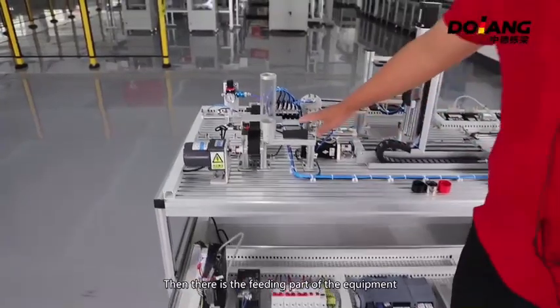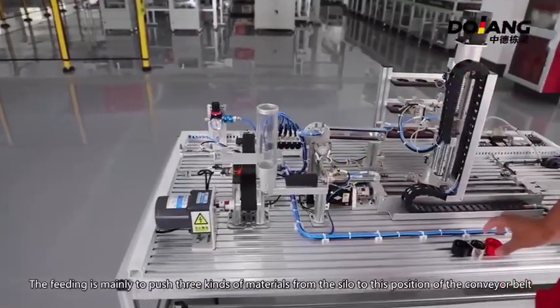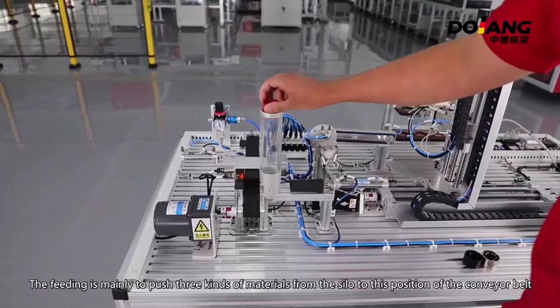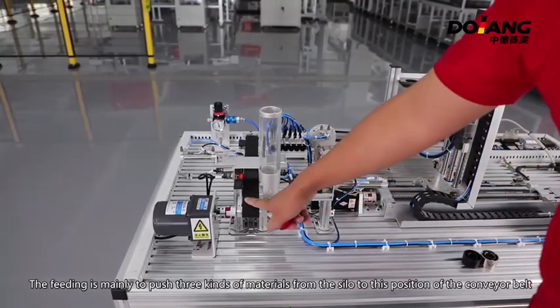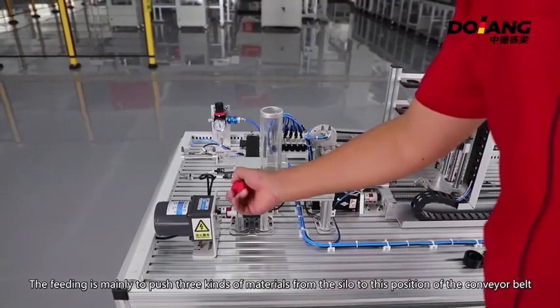Then, there is the feeding part of the equipment. The feeding mainly pushes three kinds of materials from the silo to the position of the conveyor belt.